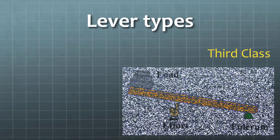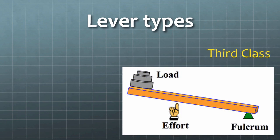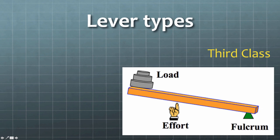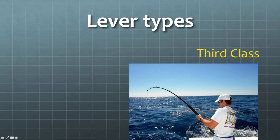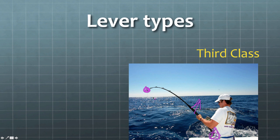A third-class lever has the fulcrum in a similar place to the second class, but the load is way out on the end and the effort is in the middle. A fishing pole is a third-class lever — the fulcrum is at the bottom, the effort is in the middle, and the weight of the fish is at the far end.